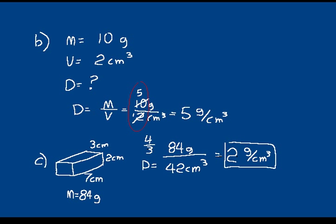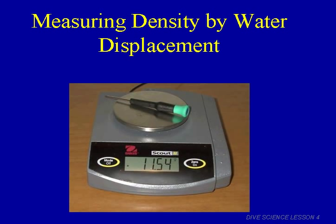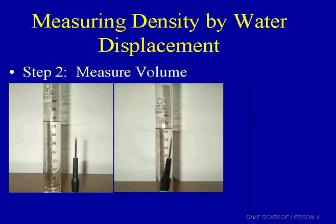A lot of times you can weigh an object with a spring scale or balance, then calculate its volume using a volume equation, and figure out its density — mass per unit volume. But what if you wanted to measure the density of an object you couldn't use a volume equation for? For an irregularly shaped object, like the screwdriver on top of this balance, you use the water displacement method. First measure the mass using a digital balance — the screwdriver weighs 11.54 grams.